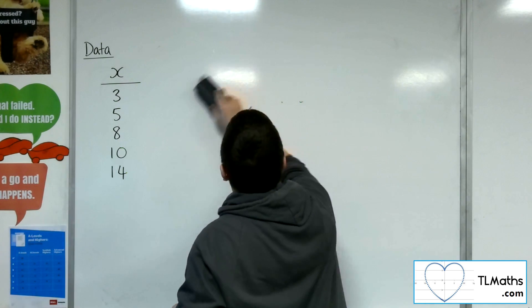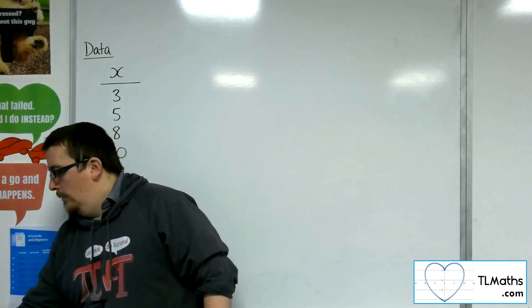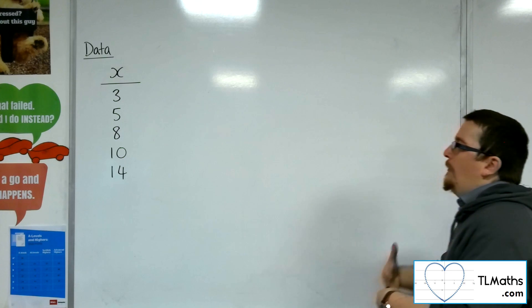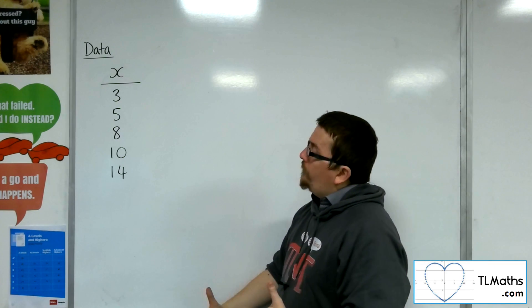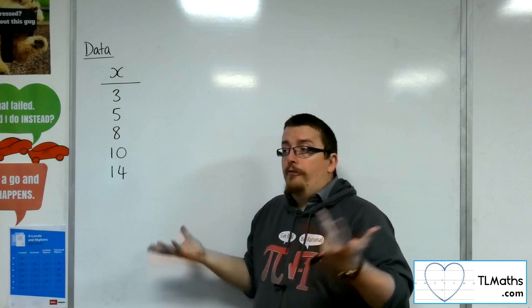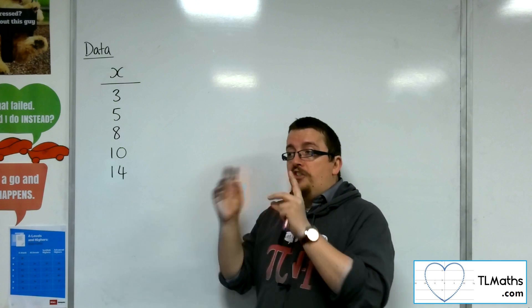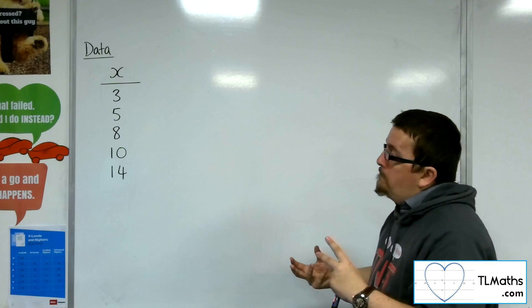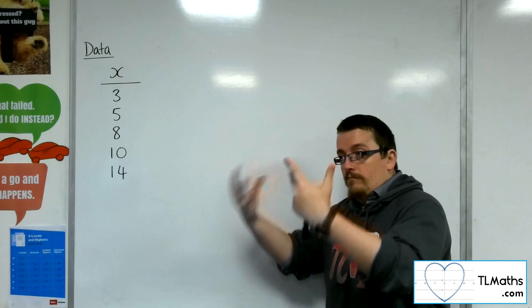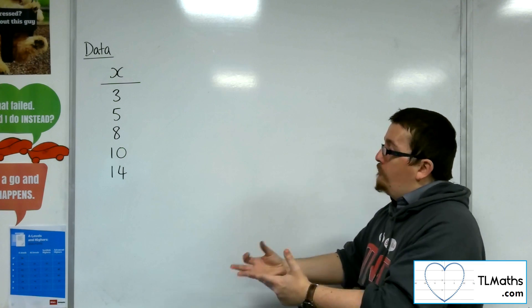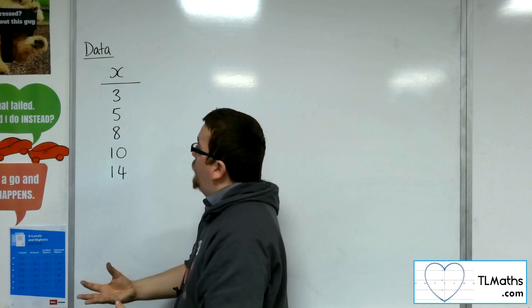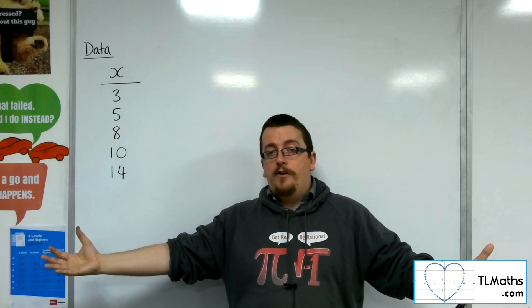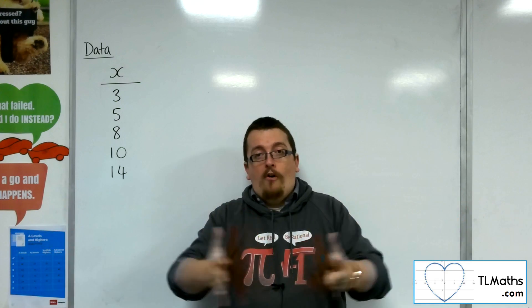So what we're going to do is we're going to look at a basic set of data, these five numbers. And we're really going to ask ourselves, as a measure of variation, we would like to find how far, perhaps on average, these data points are away from the mean. Because then that would tell you the average distance. So if the data points were closer to the mean, I would have a smaller value, and if they were further away from the mean, I would have a larger value. And so it would be a measure of variation.